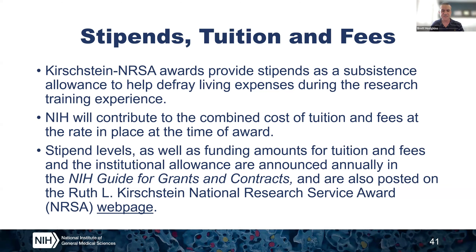For tuition and fees, this has been a very stable cost for the last several years. NIH allows up to $16,000 for those individuals in a solo degree-granting program, or up to $21,000 per year per trainee for those in a dual degree program — such as an MD/PhD program like the MSTP. That $16,000 and $21,000 has been very consistent for several years, but if those amounts increase, that will be published through the NIH Guide for Grants and Contracts.